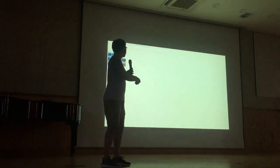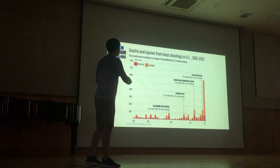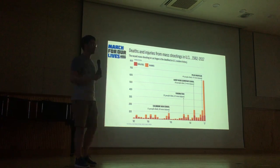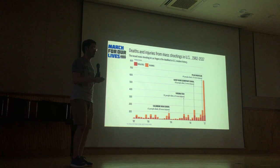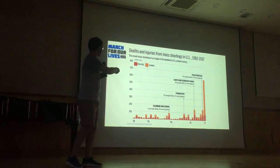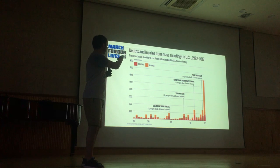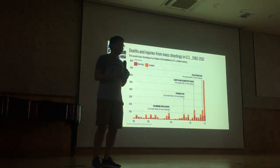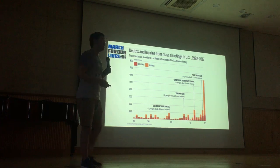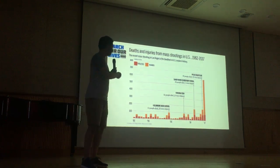To top it all, I'll introduce you to this graph, and it doesn't even include the Las Vegas shooting, which is the most deadly of all time. There are all these different shootings involving 50 people dead, 53 injured — high death tolls, high numbers of injured people.